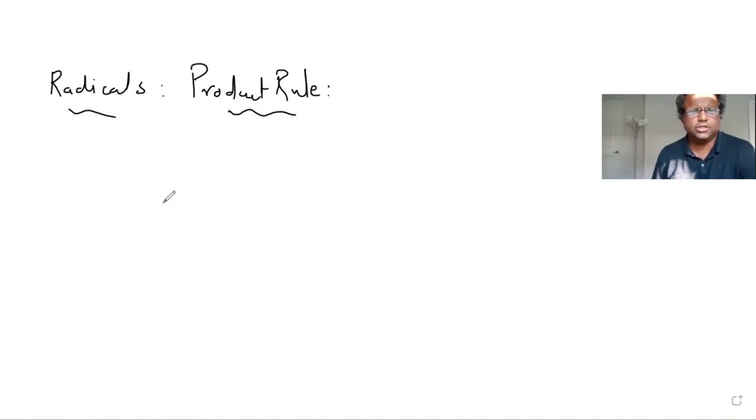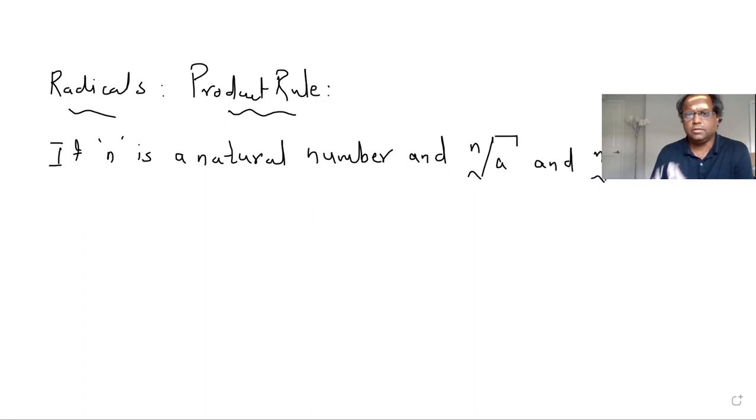I'll give you the quick definition and I'll tell you how to use it. So if n is a natural number and n root of a and n root of b are two real numbers, then